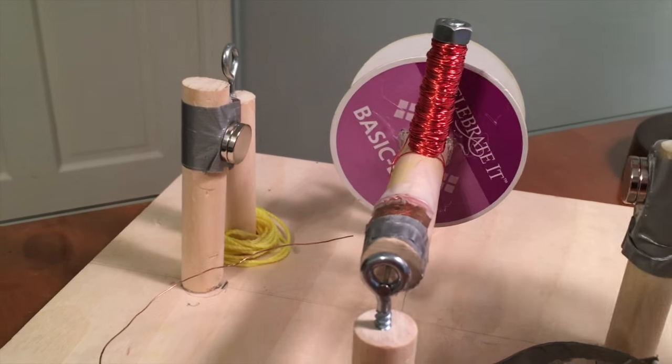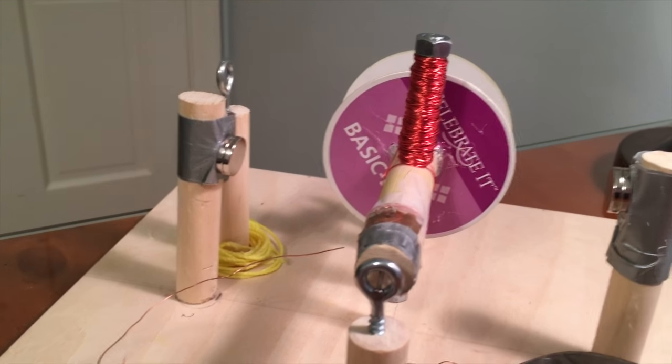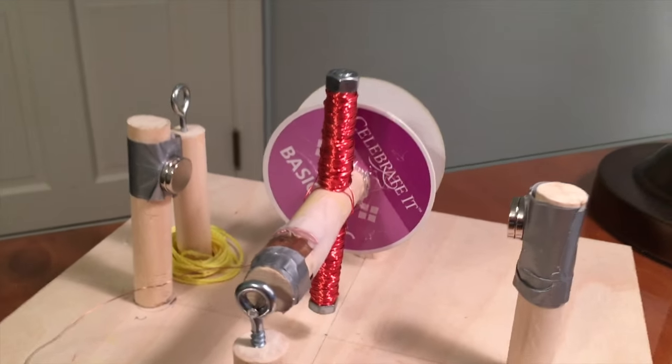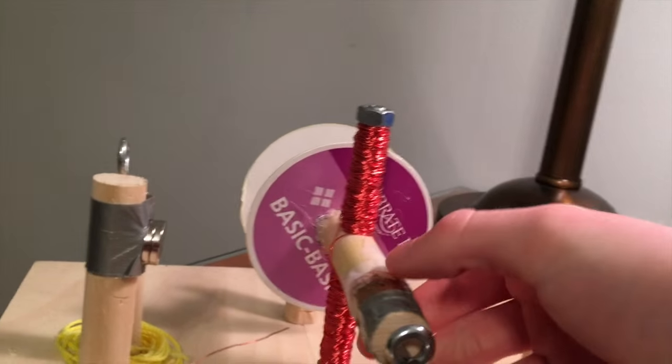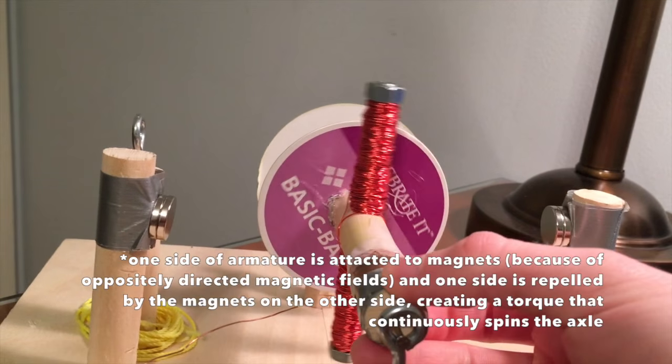When they're in this upright position, since the wires are held one above one below in that same position the entire time, when it's in this position one side of the armature is attracted and one side repels.